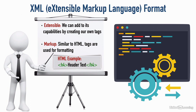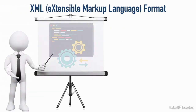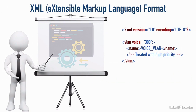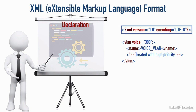Now let's take a look at some of the pieces and parts that make up the XML format. To work through this, let's look at a very simple piece of XML code on screen, and we're going to break this down line by line. The first thing I want to draw your attention to is the XML declaration — that's what's at the top, and it's the first line of an XML document if we use it.